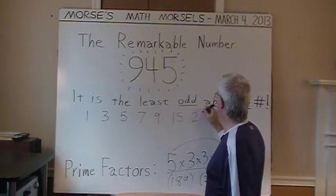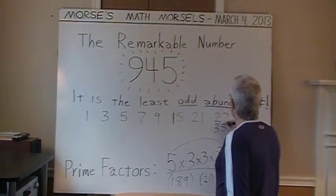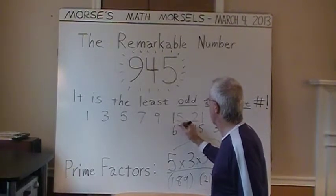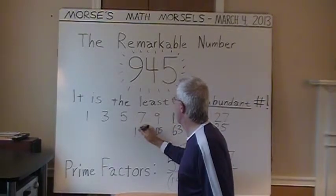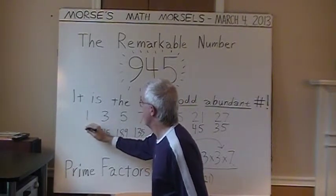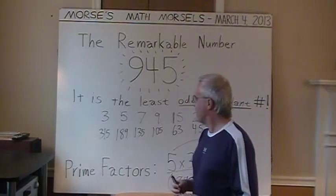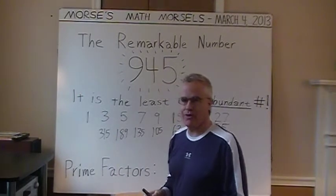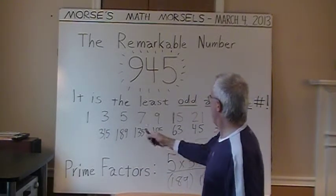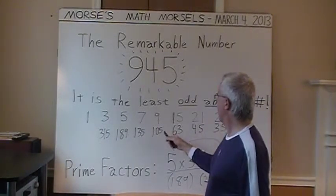...15, 21, and 27. I'll pair them up with the remaining proper factors. 27 times 35 is 945. Continuing with the remaining factors: 45, 63, 105, 135, 189, 315. So those are all the proper factors. There are 15 factors altogether.